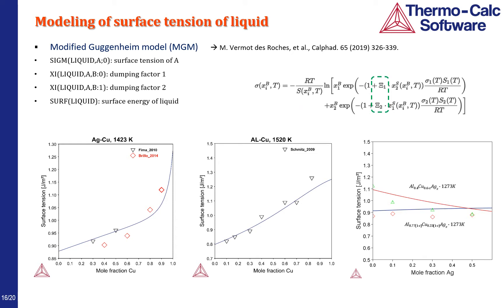Surface tension is modeled based on the modified Guggenheim model. Sigma is for each pure element, and chi is the so-called damping factor used to describe the composition dependence as shown in the equation. The software takes care of the details and complexities. Here are examples of silver-copper, aluminum-copper, and aluminum-silver-copper melts.